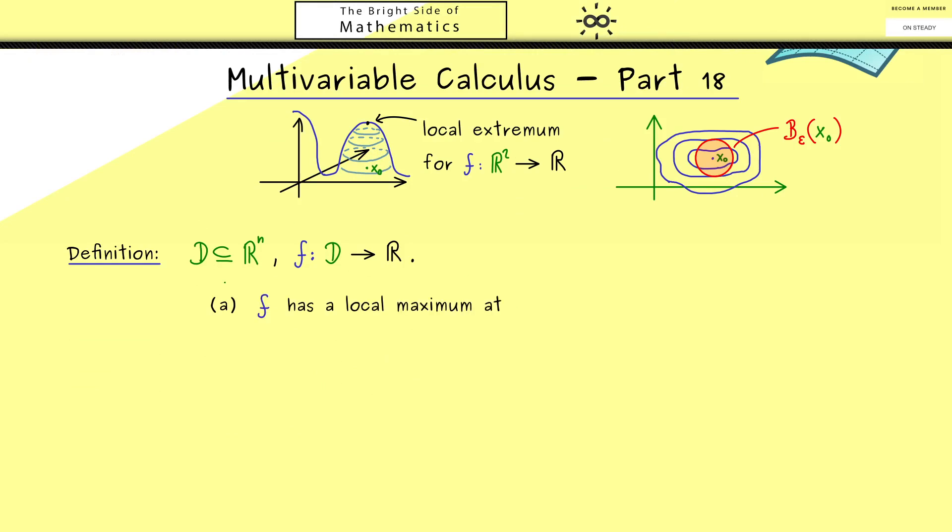And also a function f defined on D that should map into R. In fact, for the definition here it could be any function, but usually we would have a continuous function. Then let's first define the term local maximum of the function f. More precisely, we would say that the function f has a local maximum at a point x_0 in D if we find an epsilon neighborhood around this point x_0 such that f(x_0) is the maximum of this function in this neighborhood. Hence we could write f(x_0) is always greater or equal than all the other values. More precisely, we would write this inequality holds for all x in D intersected with B_epsilon(x_0). So it's exactly the picture from above but now restricted to the domain of definition D.